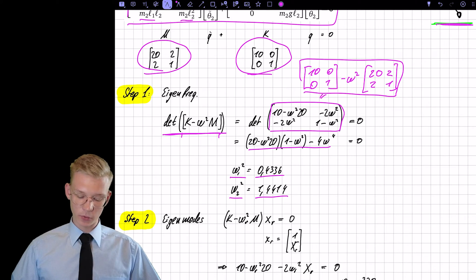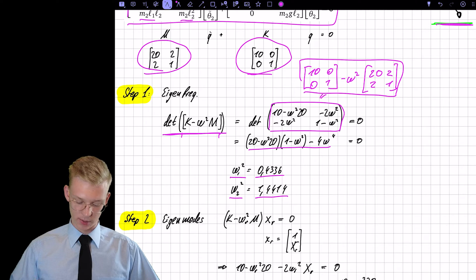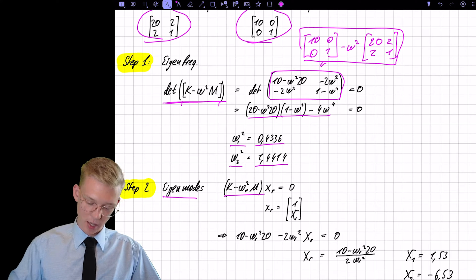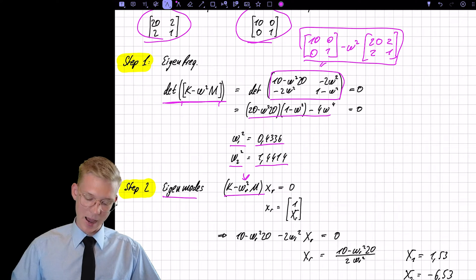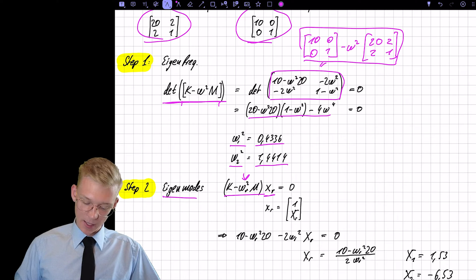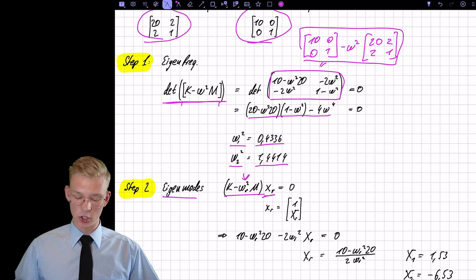Now we have to get the eigenmodes and to get the eigenmodes we have this equation. We insert the eigenfrequencies that we found before and can determine our xr so our eigen shape.